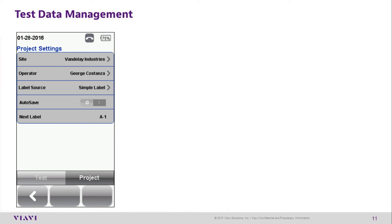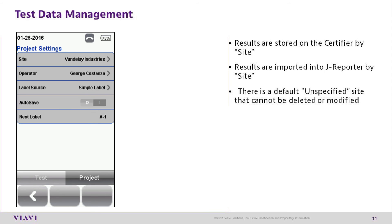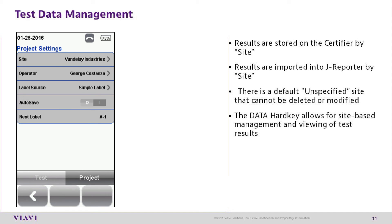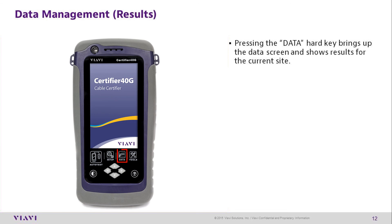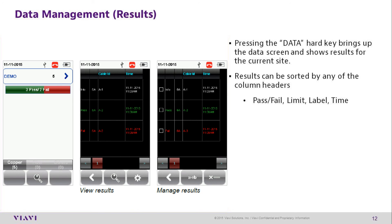Results are stored on the certifier by site and are also imported into Jreporter by site. There is a default unspecified site that cannot be deleted or modified. The Data Hard Key allows for site-based management and viewing of stored results. Pressing the Data Hard Key brings up the data screen and shows stored results for the current site. Results can be sorted by any of the column headers, such as pass/fail, limit, label, and time of test.